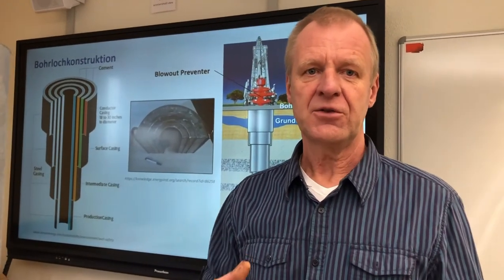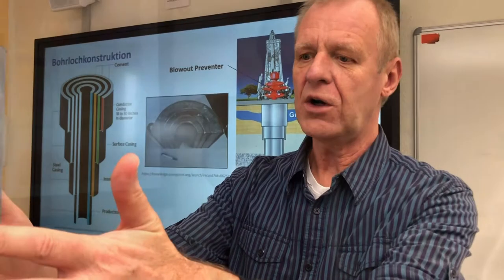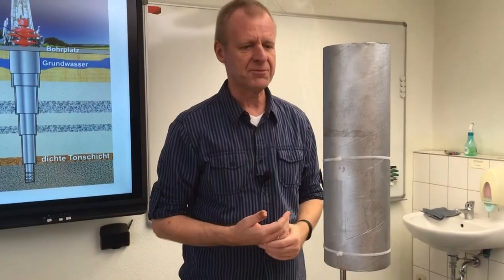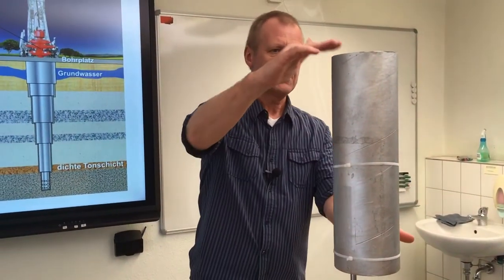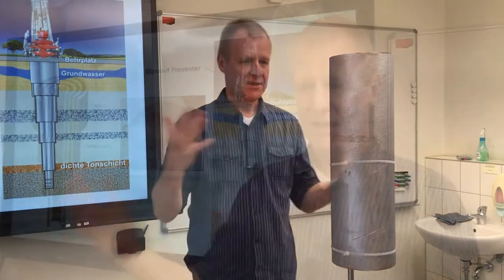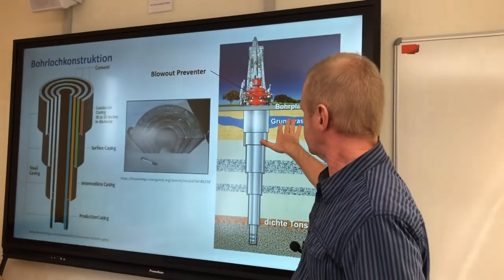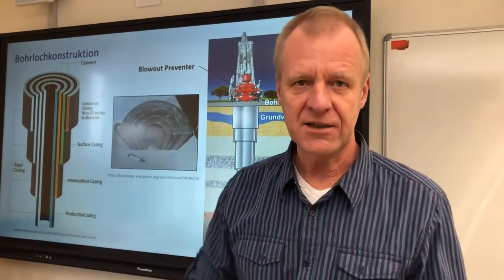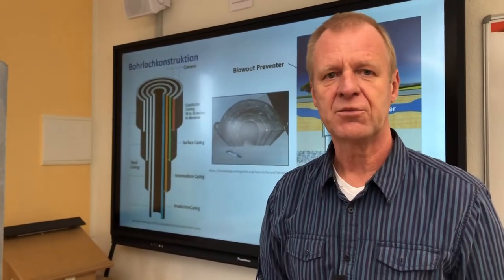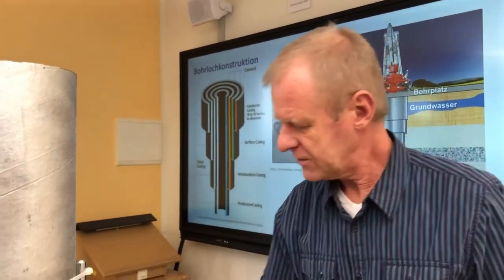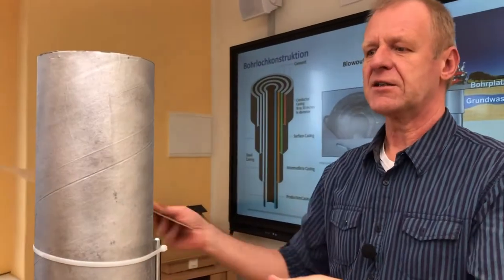When a deep borehole has been drilled, the first step is to ram or drive a steel tube called a casing into the ground. This is supposed to seal the groundwater. As you can see here, in the upper layers of the earth we have drinking water and this must be protected. This steel tube, the conductor casing, shields the drinking water from our drilling operation.